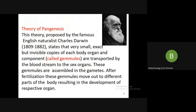The theory of Pangenesis was proposed by the English naturalist Charles Darwin. It states that very small but invisible copies of each body organ and component, called germules, are transported by the bloodstream to the sex organs. These germules are assembled in the gametes. After fertilization, these germules move out to different parts of the body, resulting in the development of respective organs.